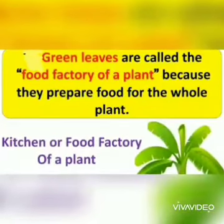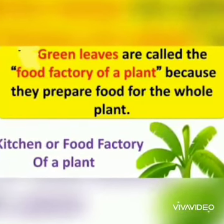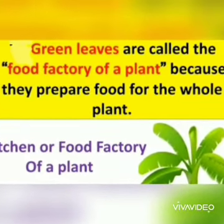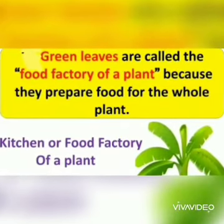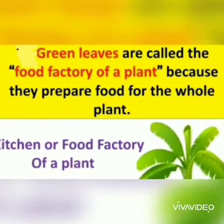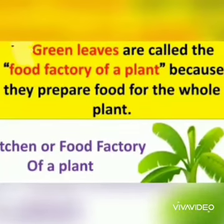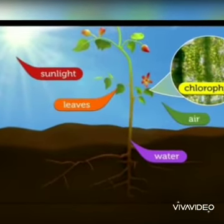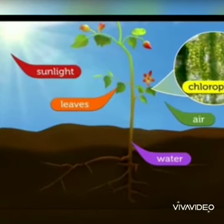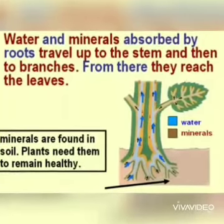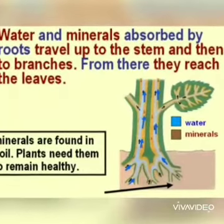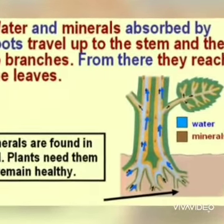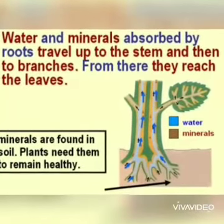Children, do you know? The leaf is called kitchen of the plant. Why are leaves called kitchen of the plant? The leaf prepares food for the plant with the help of air, water and sunlight. That's why the leaf is called kitchen of the plant. It takes in water through the roots. While preparing food, it gives out oxygen. All living things need oxygen to live.